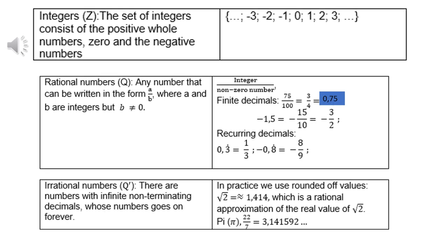Next will be integers. Take note, we use the symbol Z. The set of integers consists of the positive whole numbers, zero, and the negative numbers. What is still missing? Fractions. Fractions are missing, but now we have all the whole numbers, natural numbers, even numbers, odd numbers, and prime numbers.